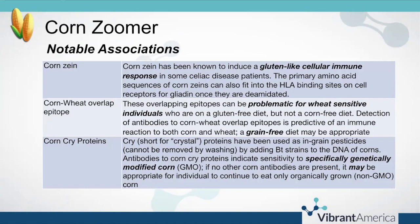Some of these markers are going to have connections to wheat. There are a few on here that either gluten or wheat have overlap or cross reactivity with. Corn zein is a protein in corn that actually induces a gluten-like cellular immune response in some celiac disease patients. So if you have a celiac patient that is gluten-free but is still experiencing some degree of villus atrophy or GI inflammation, consider running a corn zoomer.